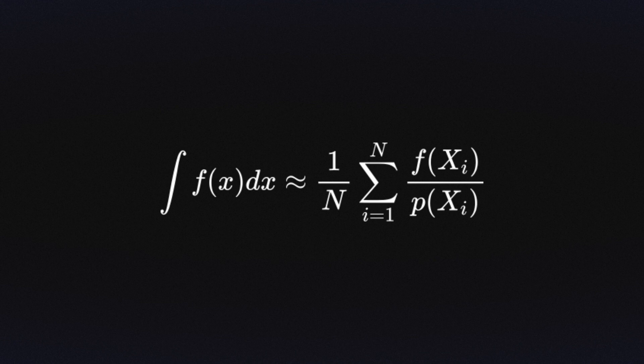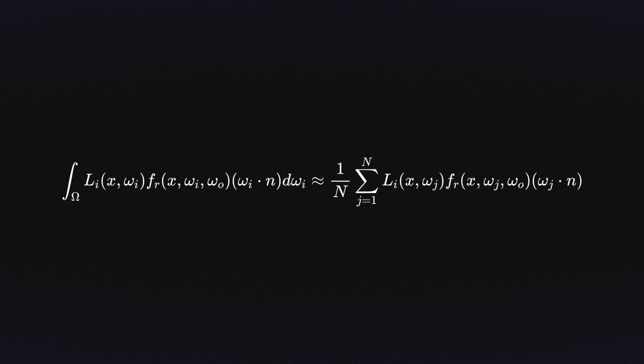Substituting our integral in, without the PDF, we get this. You may notice that this is exactly equivalent to averaging n samples of the incoming light in a direction in the hemisphere, which is what we do.